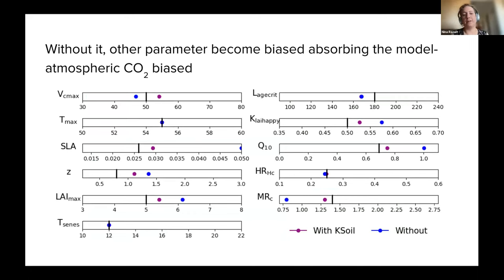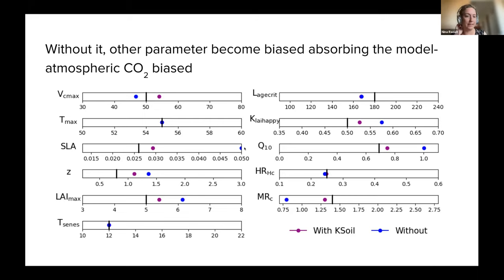The problem is that if we don't use a parameter like this, then the other parameters become biased. In a quick experiment at a single FLUXNET site, the purple case shows when the k_soil_c parameter absorbs the initial carbon condition, and blue is without it. Without it, the parameters change a lot more and some start hitting the bounds of reality — for example, specific leaf area goes beyond the accepted range, and Q10 (a respiration parameter) also starts reaching its bounds.